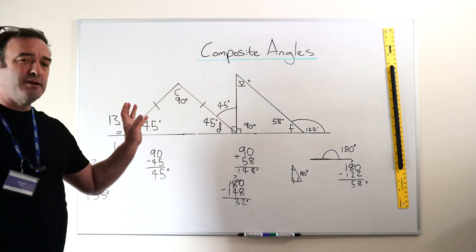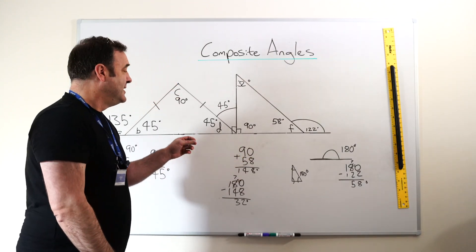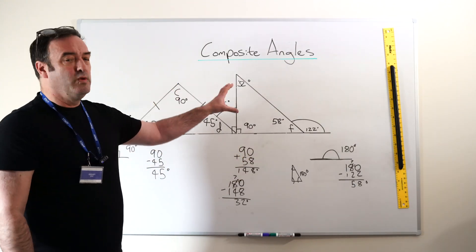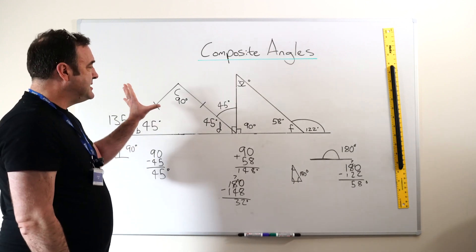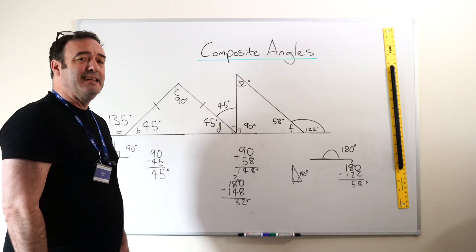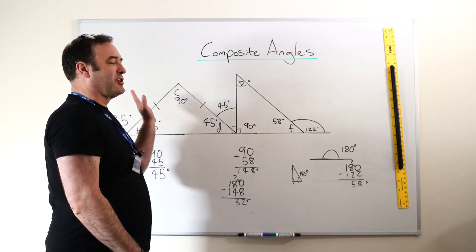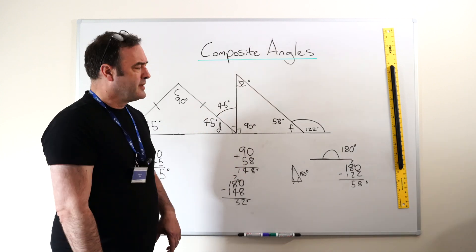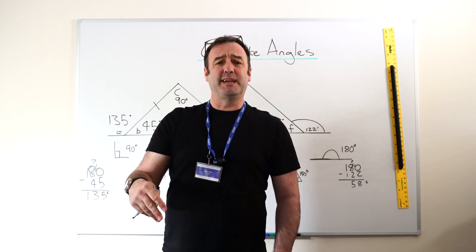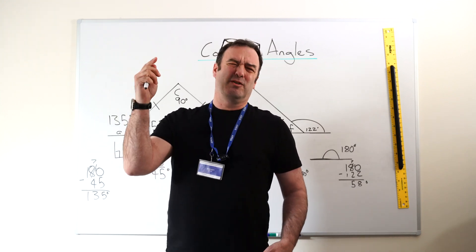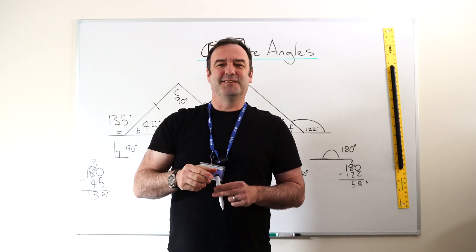There we are. Just by using angle rules — and we can thank great mathematicians of the past, like Euclid, for this — we can actually work out all of these angles without getting out a protractor once. This is the type of question that you can get in an 11 Plus exam. That's not to say this exact style will come up, but I've seen it before. I hope you've enjoyed that video. My next one will be aimed at younger students. We're trying to do one for the younger and one for the older each week. Look forward to seeing you soon. Thank you. Goodbye.